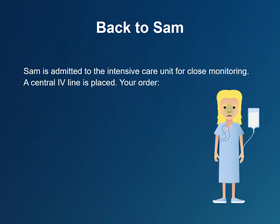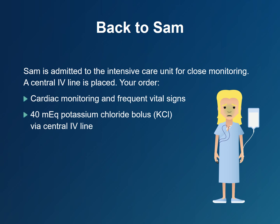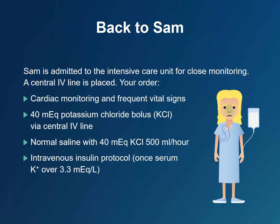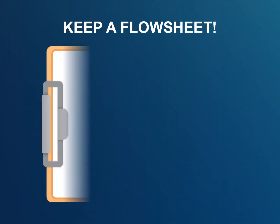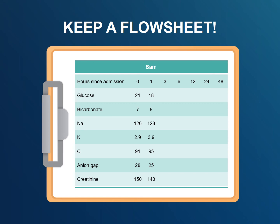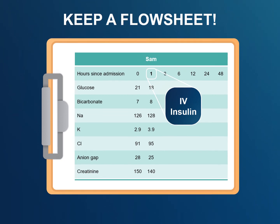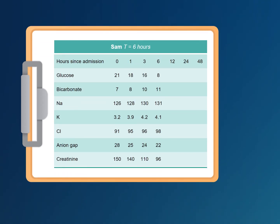Back to Sam's case: he is admitted to the intensive care unit for close monitoring. A central intravenous line is placed. Orders include cardiac monitoring and frequent vital signs, a 40 mEq potassium chloride bolus via the central line, then intravenous normal saline with 40 mEq potassium chloride per litre running at 500 mL per hour for the first few hours. Once serum potassium is over 3.3 mmol per litre, an intravenous insulin protocol is started. Frequent blood tests are requested to monitor his progress. Keep a flow sheet — it makes it easier to follow a patient's progress and adjust treatment. Intravenous insulin is delayed for 1 hour to replace his potassium. After 6 hours, his serum glucose has fallen nearly back to normal, but his anion gap, a marker of acidosis, remains elevated.